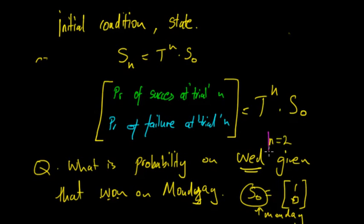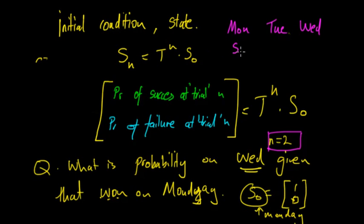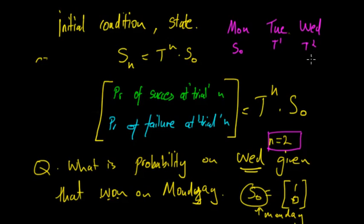That's quite important. Monday is the initial condition, then you have Tuesday, then you have Wednesday. So you can think of Tuesday as T1 and Wednesday would be T2. When you look at questions, you need to work out what N equals.